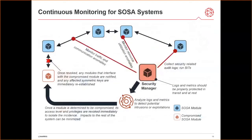Only upon successful validation will the security manager grant privilege to the new component based on a pre-placed policy. Access can be controlled by keys or certificates the module needs to access other resources in the system. Once past the security attestation, the security manager will continuously monitor the system for intrusion and exploitation. This is done by enforcing collection of security-related metrics and logs from operating modules and running analysis. If a compromise is detected, the security manager needs mechanisms to quickly revoke privileges of the potentially compromised module to contain the incident. If the mechanism is not well thought out — for example, if a system uses a single key to encrypt all inter-module communications — then a breach in one module will impact the entire system, which is not resilient.